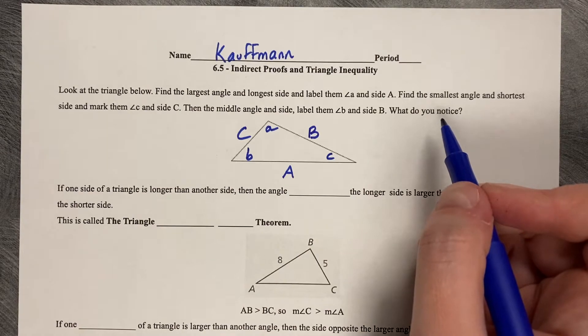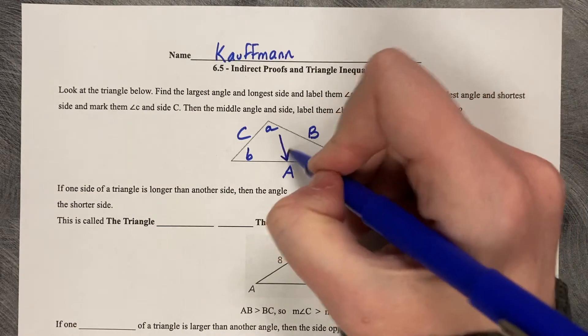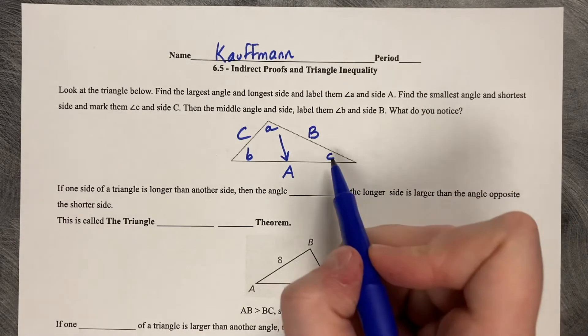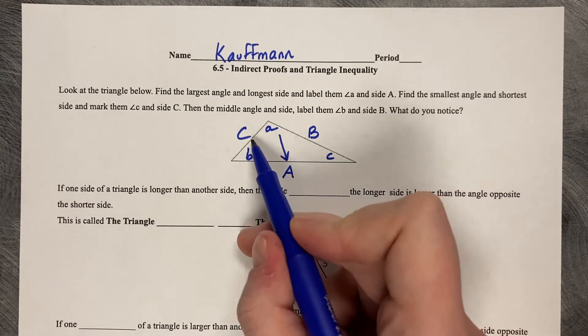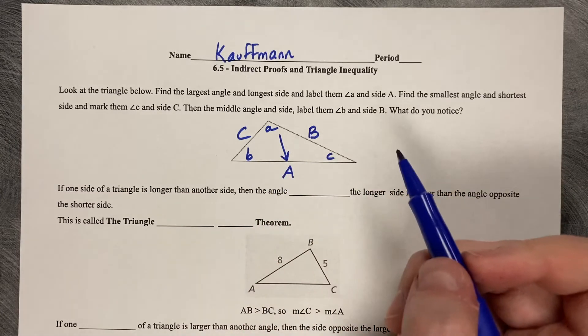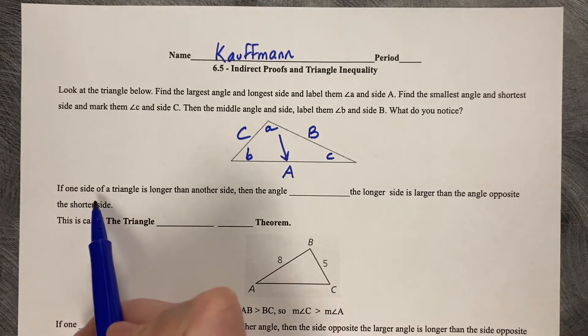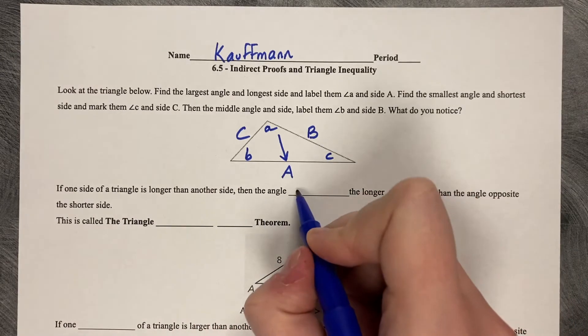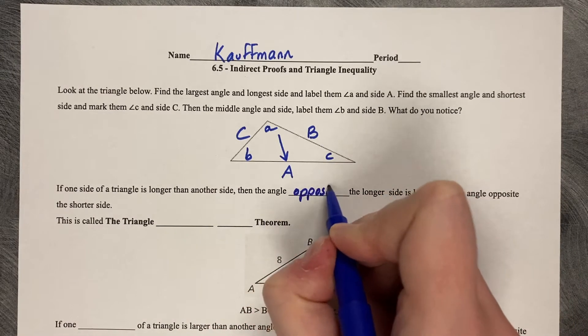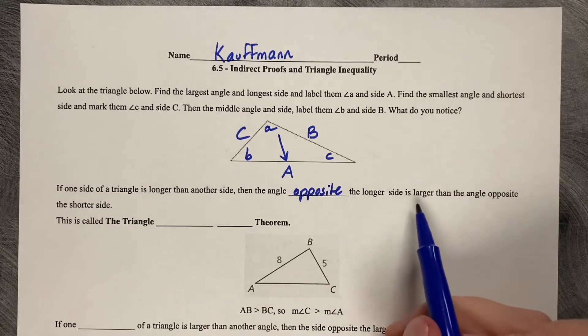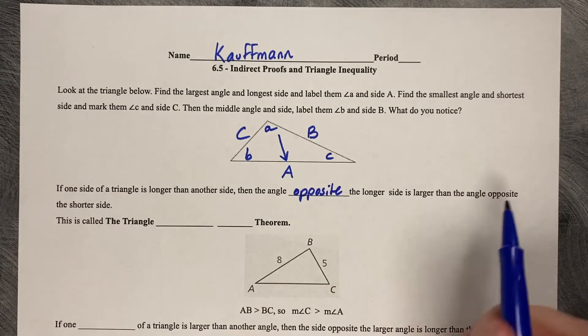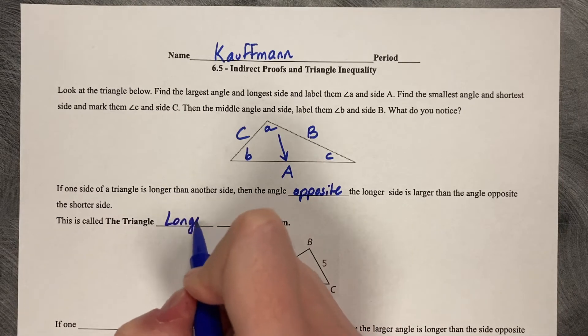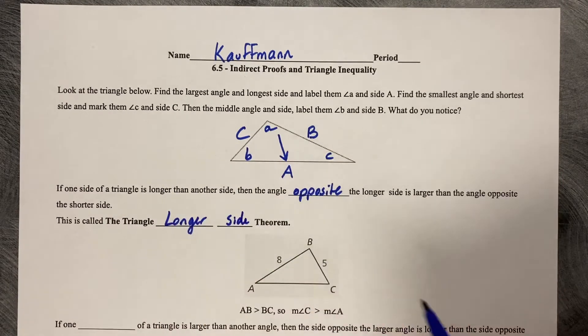What you should notice is that each of them are directly across from each other or opposite from each other. So if I go to my smallest angle, it's opposite of my smallest side. This is no coincidence. If one side of a triangle is longer than another side, then the angle opposite the longer side is larger than the angle opposite the shorter side.